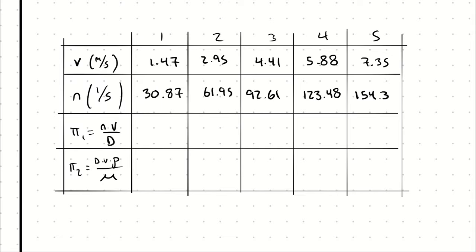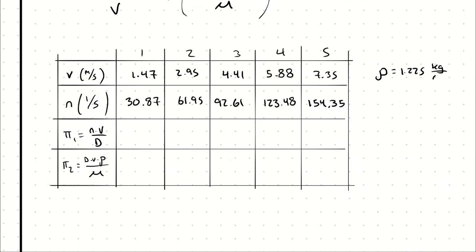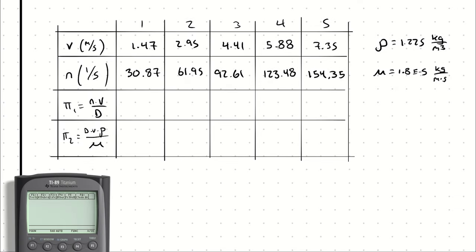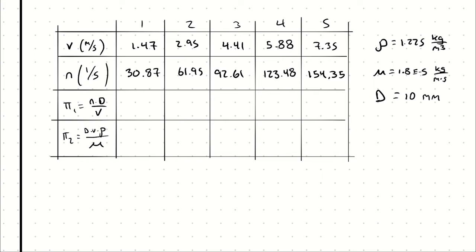As a result of my Buckingham Pi theorem analysis, I can write shedding frequency times diameter divided by velocity is a function of density times velocity times diameter divided by viscosity. Using that information, I will generate a row for pie group one and pie group two for each observation in my table. I'll be calculating values for each of my five observations using ρ = 1.225 kg/m³, μ = 1.8 × 10⁻⁵ kg/(m·s), and D = 10 mm. Remember I want my pie groups to produce dimensionless parameters, which means all units must cancel. So instead of 10 millimeters, I will use 0.01 meters.